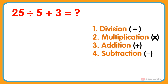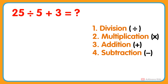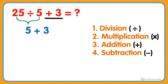What is 25 divided by 5 plus 3? In this problem, two operations — division and addition — are given. So according to the order, we would first perform the division: 25 divided by 5 gets 5. And next, add 3 to the result, and you will get your answer: 5 plus 3 equals 8.